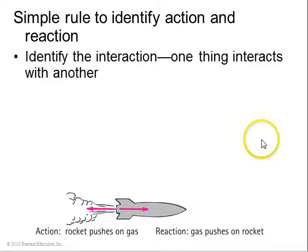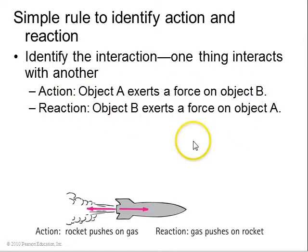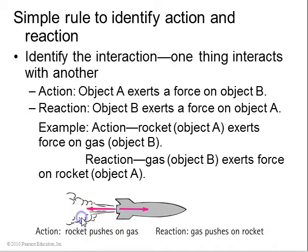So a simple rule to identify action and reaction forces is, first look at the interaction. One thing interacts with another. If you say that object A exerts a force on object B, that's your action. The reaction is that object B exerts a force on object A. Example: if you have a rocket, object A exerts a force on gas, object B. And the reaction is that the gas, object B, exerts a force on the rocket, object A.